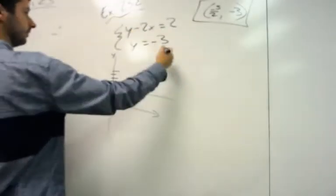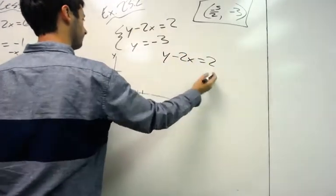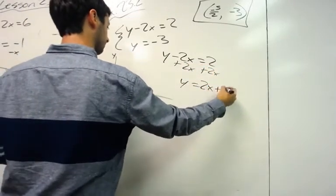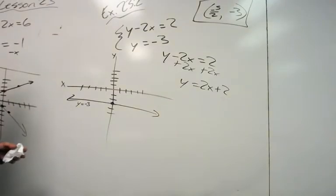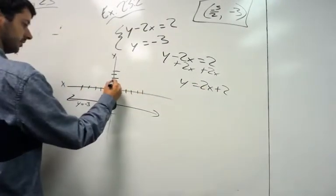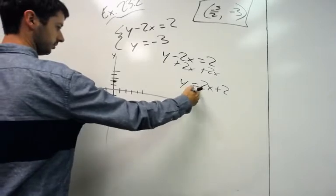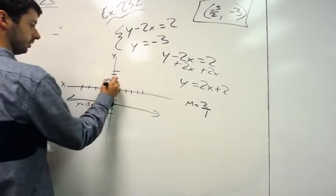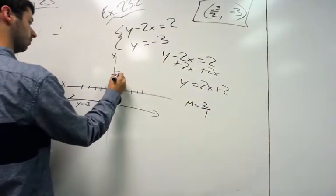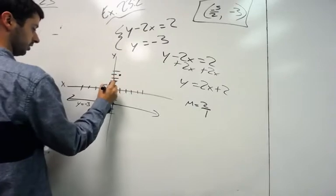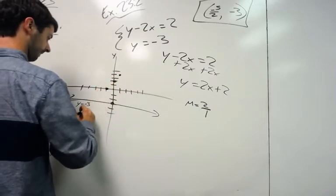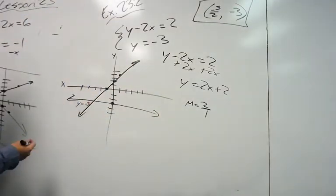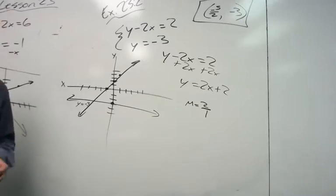Now we do the other one. y minus 2x equals 2. All we've got to do is add 2x. y equals 2x plus 2. And we graph that. y-intercept is 2. Slope is 2. If it's 2, that would be the same as saying 2 over 1. So you would go up 2, and then you would run, or go horizontal, 1. Or you could go down 2 and to the left 1. There's your line. Your point would roughly be here where they intersect. And that's how you do graphical solutions.